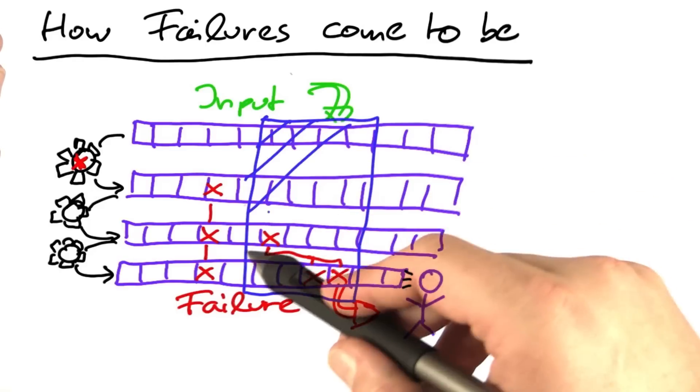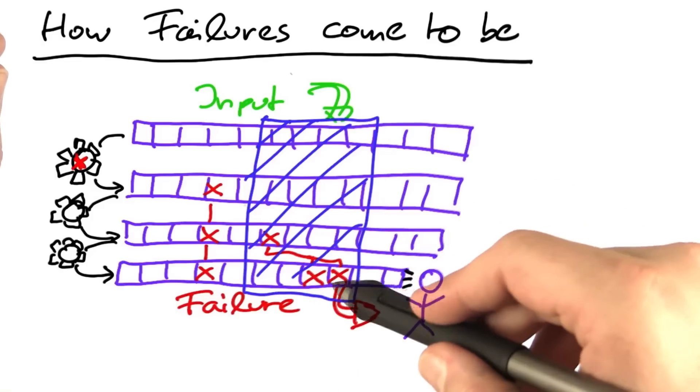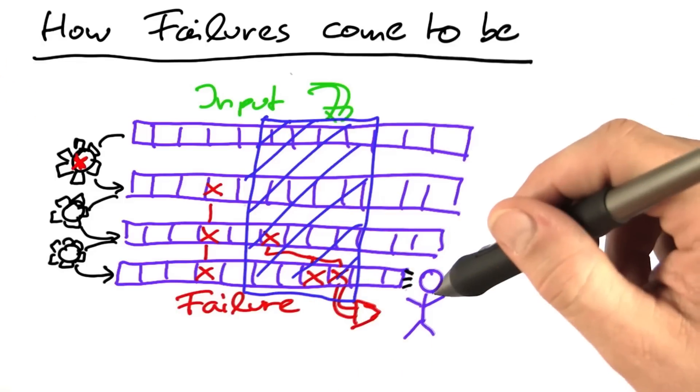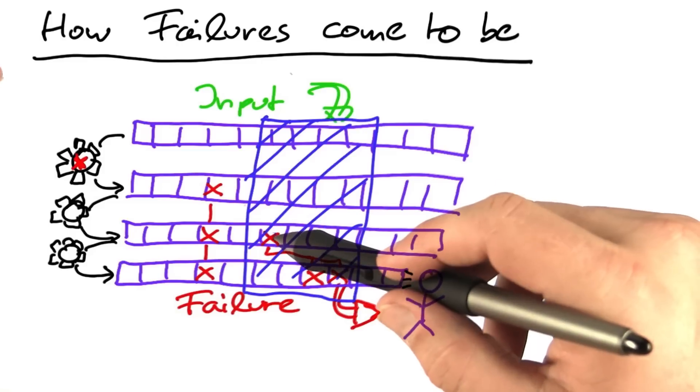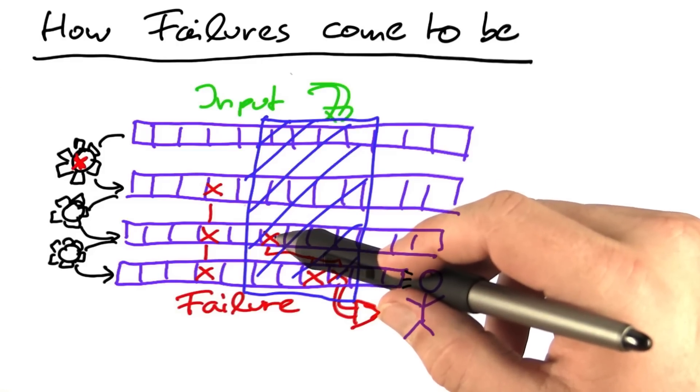Suppose you have an assertion that checks all of this area every time a function is invoked. Then you wouldn't see the failure only at the last moment, but you would see the failure as soon as the infection spreads towards it.